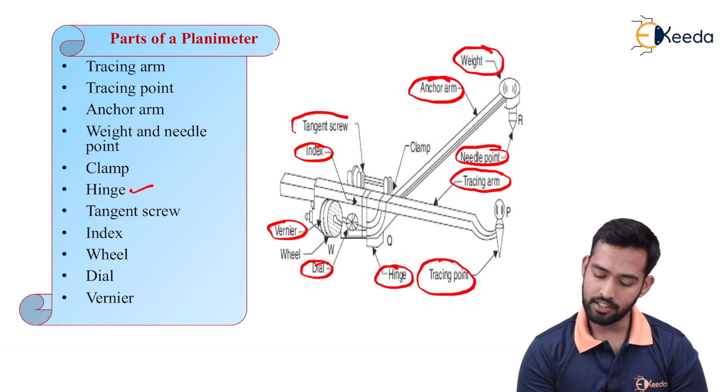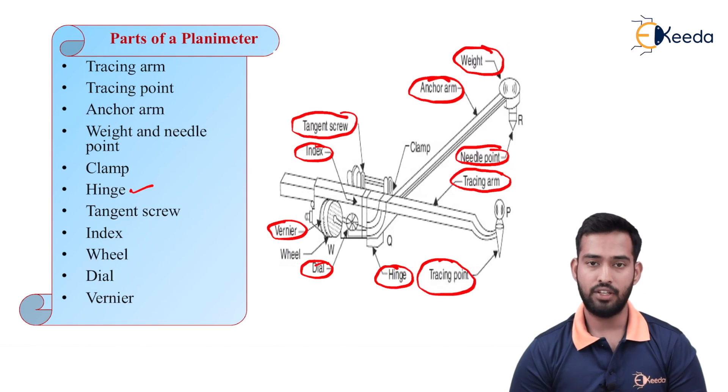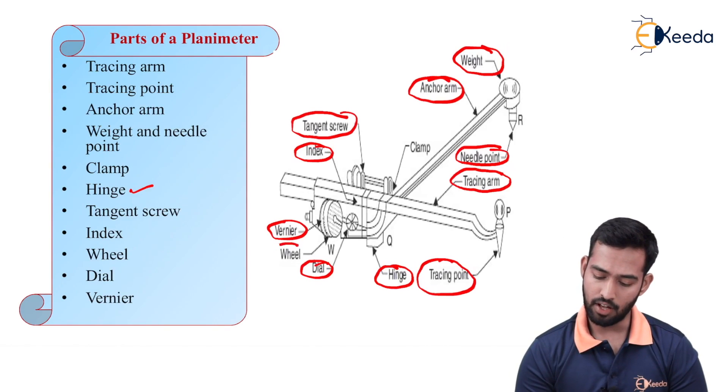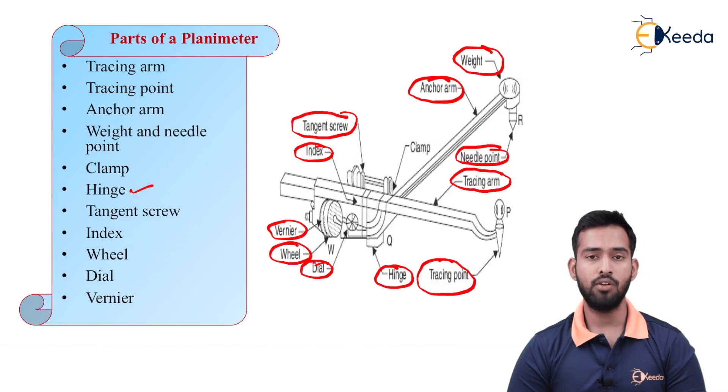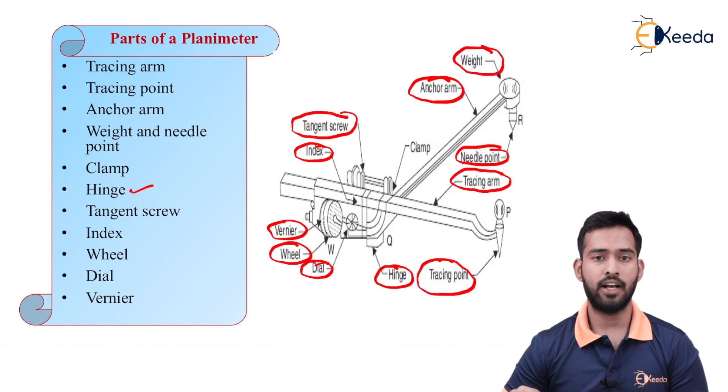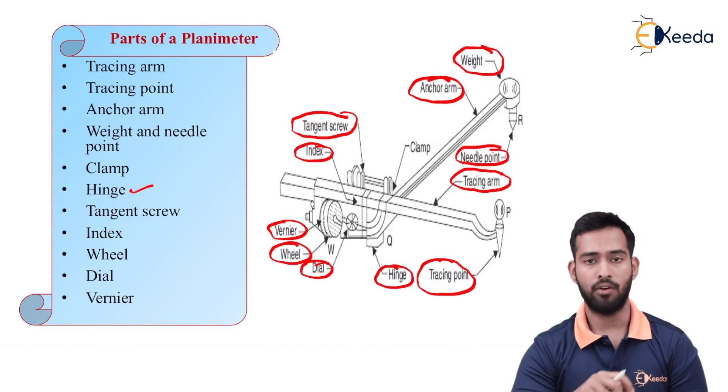Then, we have tangent screws to adjust your tracing arm and we have a wheel which will support to rotate the tracing arm smoothly over your boundary edges.